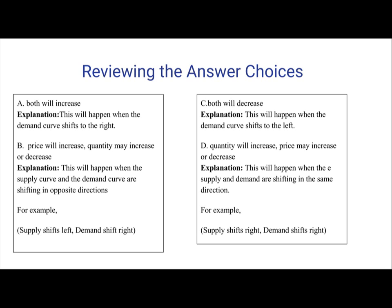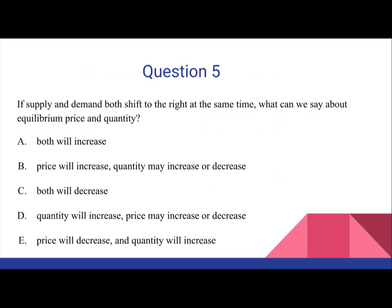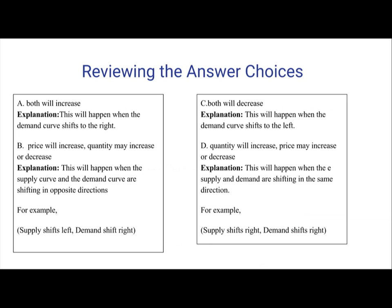D: Quantity will increase, price may increase or decrease. This will happen when the supply curve and demand curve are shifting in the same direction — for example, supply shifts right and demand shifts right, or supply shifts left and demand shifts left. Back to the problem, it's asking what happens when supply and demand both shift to the right at the same time, so D seems like the right answer. The result — quantity increasing and price being ambiguous — would result from the supply and demand curves shifting in the same direction.